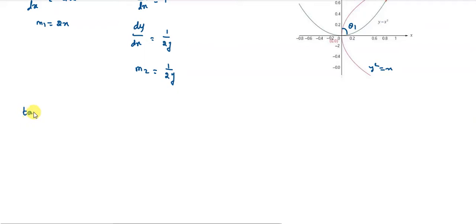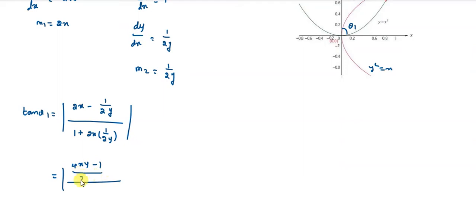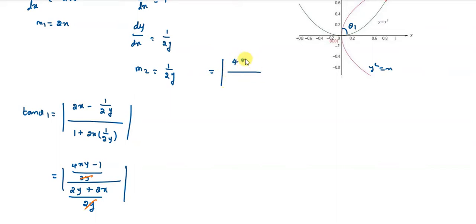Now, tan theta 1 is equal to the modulus of m1 minus m2 over 1 plus m1 times m2. Substituting m1 = 2x and m2 = 1/(2y) and cross multiplying by 2y, this simplifies to the modulus of 4xy minus 1, the whole divided by 2 into x plus y.